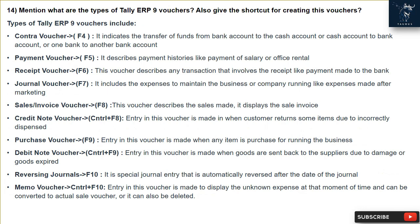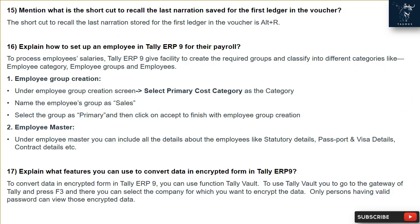Sales Invoice Voucher (F8) — describes sales/purchases and displays the sale invoice. Credit Note Voucher (Ctrl + F8) — entry is made when a customer returns some items due to incorrectly dispensed goods. Purchase Voucher (F9) — entry is made when any item is purchased for running the business. Debit Note Voucher (Ctrl + F9) — entry is made when goods are sent back to suppliers due to damage or expiry. Reversing Journals (F10) — a special journal entry that is automatically reversed after the date of the journal. Memo Voucher (Ctrl + F10) — entry is made to record an unknown expense at that moment, and can later be converted to an actual sale voucher or deleted.